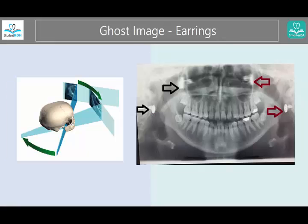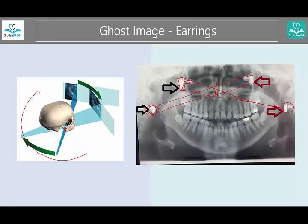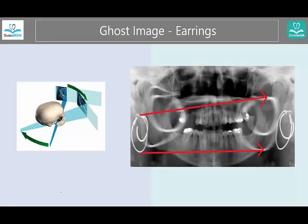Now let's look at earrings, which are the most popular example in examinations. These two are the original earrings. This one is reflected as a ghost image over here — you can see it's bigger, has exactly the same shape but is more blurry. And this one is reflected over here as well, with the tube rotating behind and the film receptor in the front.